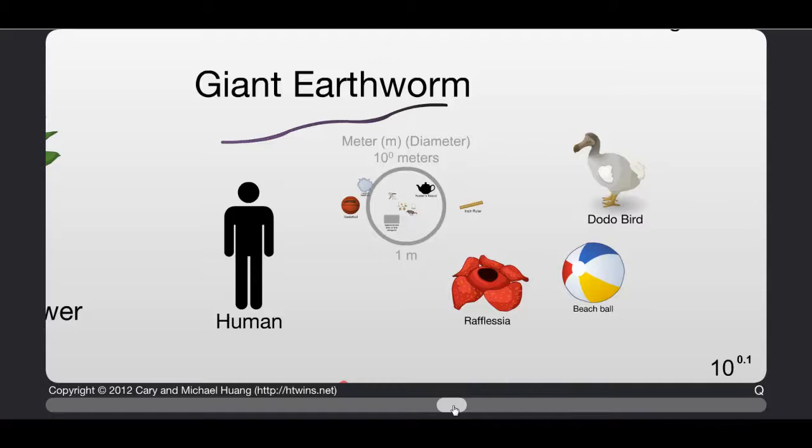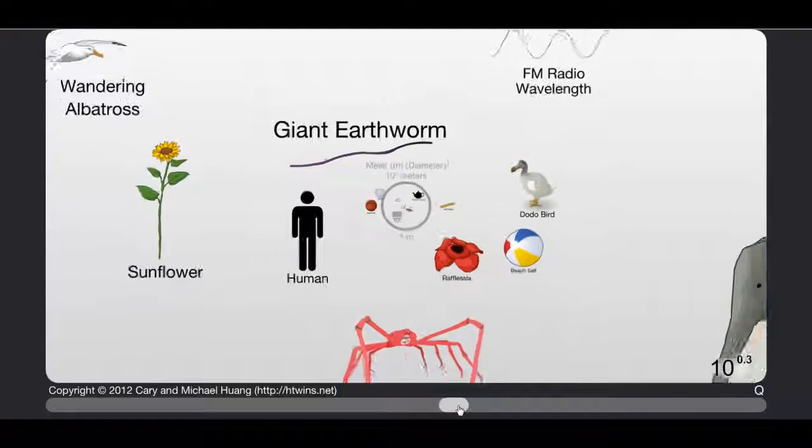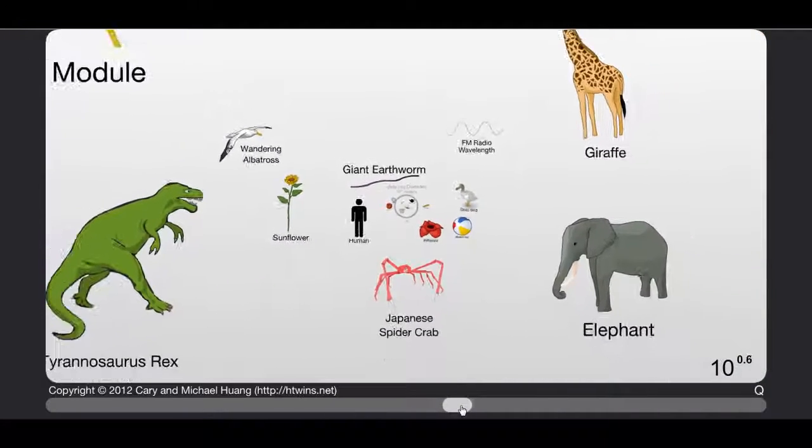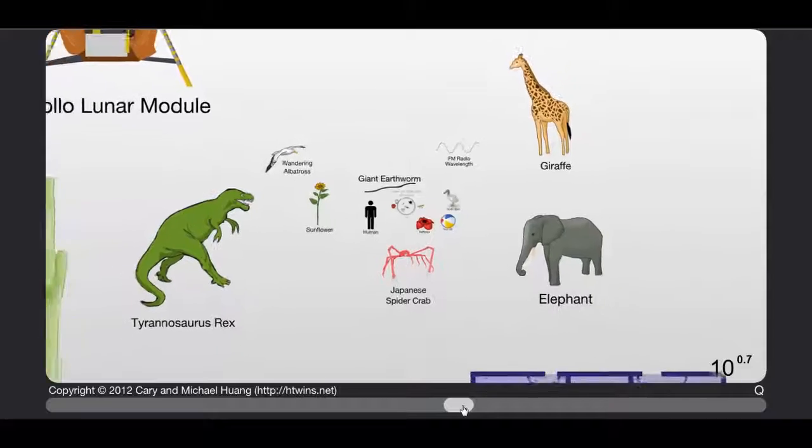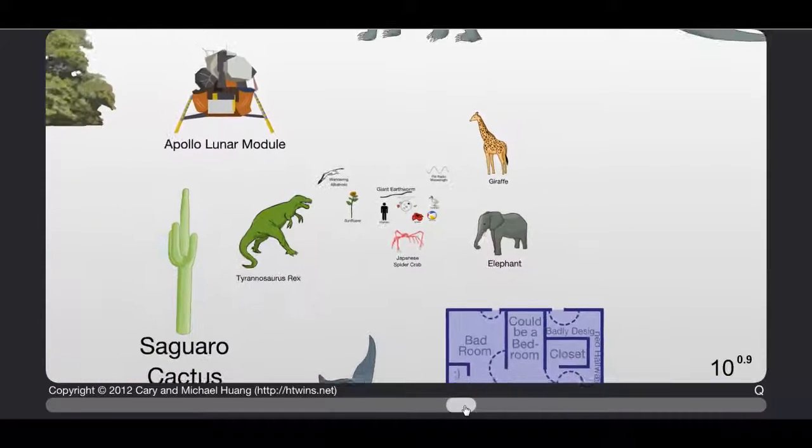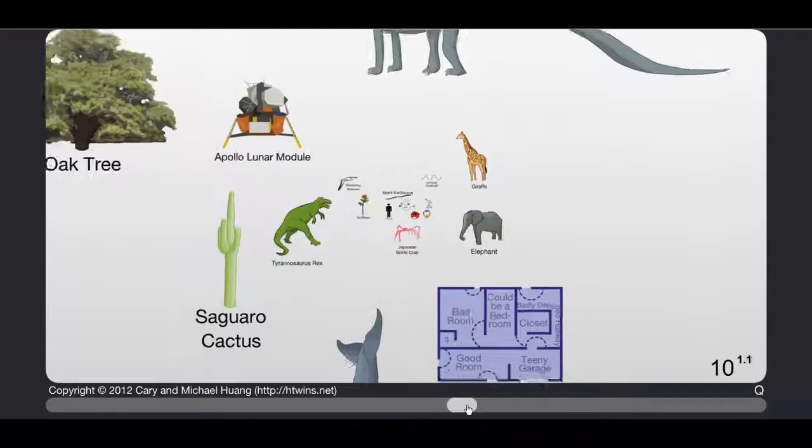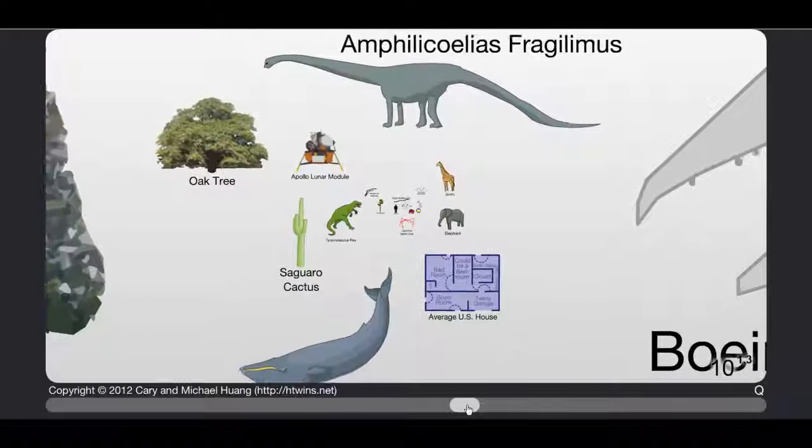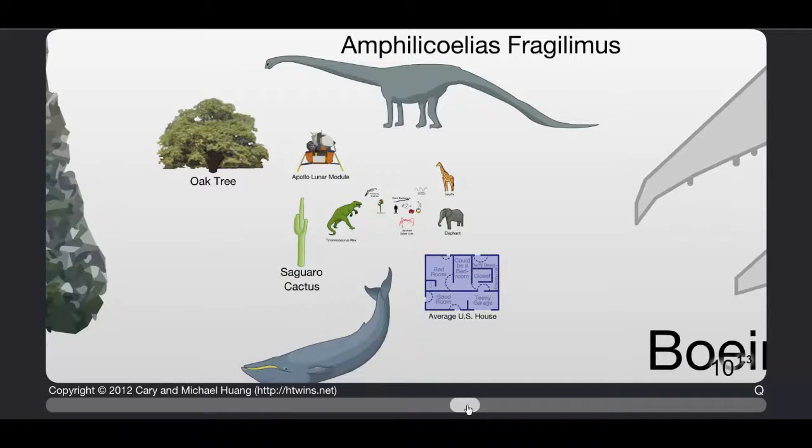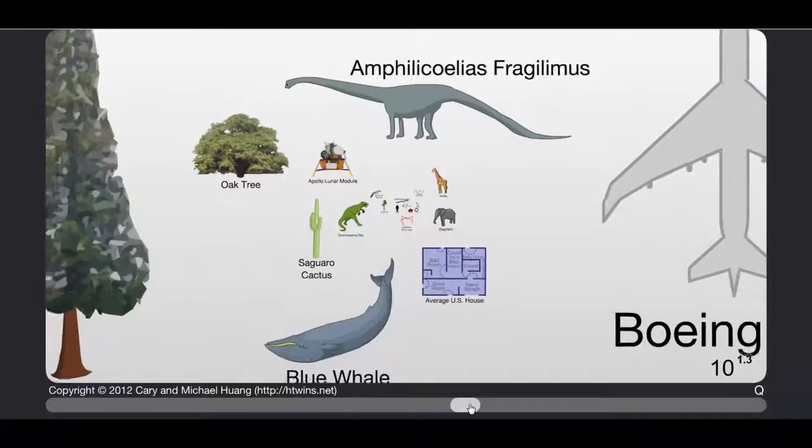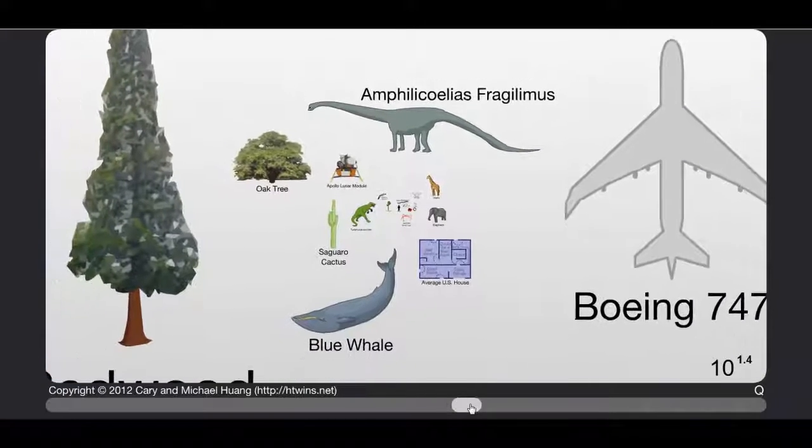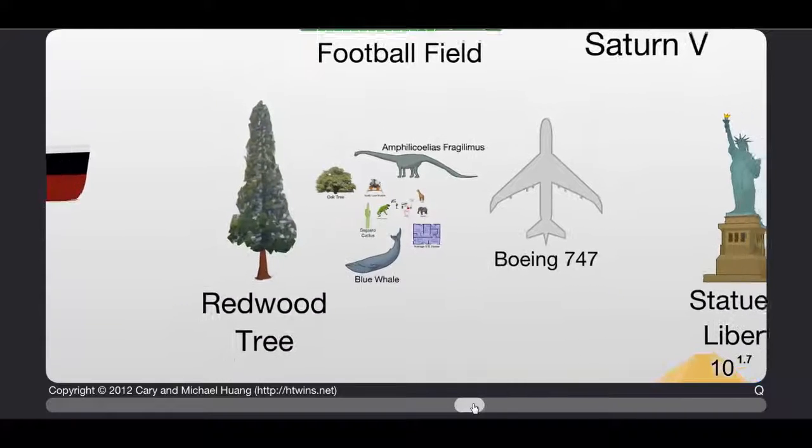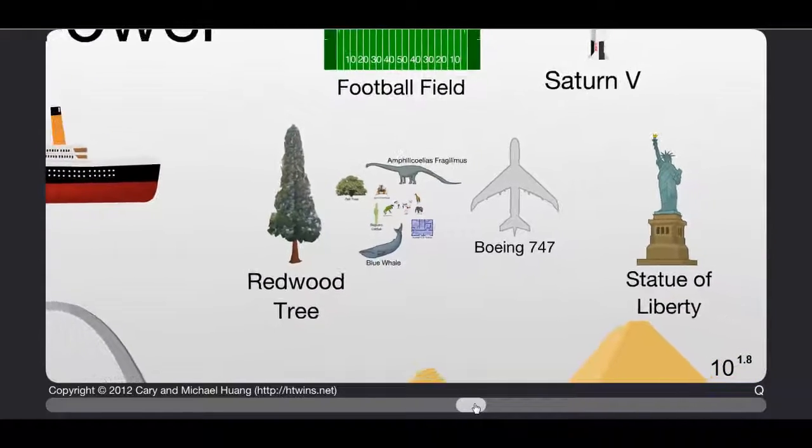Radio wavelength. Sunflowers, giraffes, elephants, T-Rex. Apollo lunar module. Cactus, oak tree, average US house. Badly designed teeny garage, good room could be a bad room, that's funny. Boeing 747. Wow a redwood tree is bigger than a... wow that's intense. A football field.